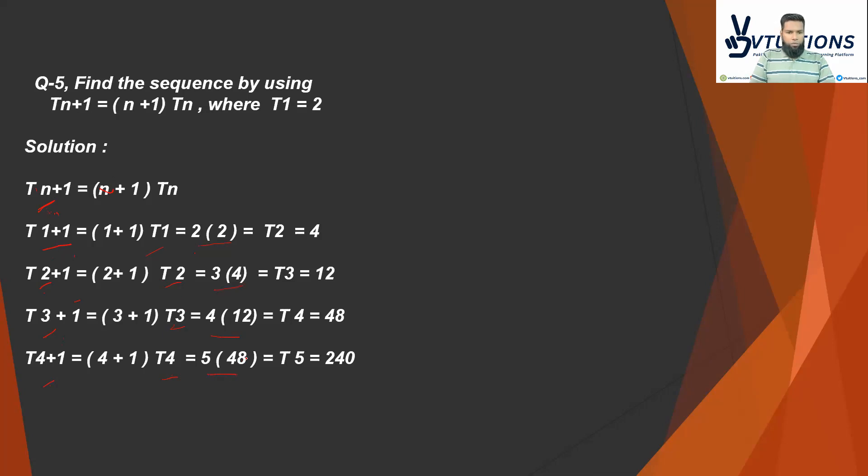If you multiply it like 5 × 48, then what will I have to do? Because I got 40, I am talking about this 40 and this 48 for T3+1, and this 12 is for T2+1, and this 4 is for T1+1, right? This series is this way.